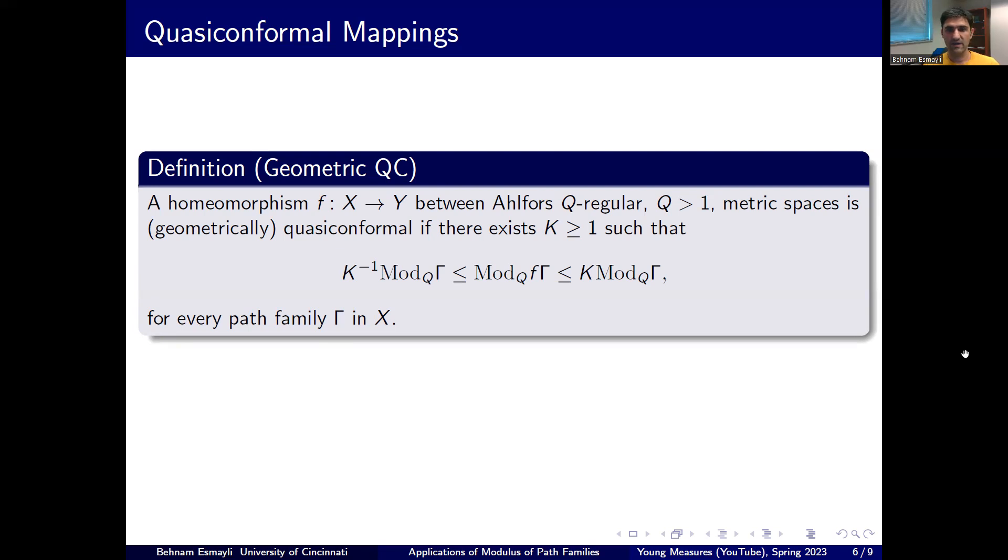So we can define these in more generality. One natural context, which doesn't allow very stupid examples, is when you have Ahlfors Q-regular spaces with Q strictly bigger than 1. And by Ahlfors Q-regularity means that the measure of the ball of radius r is comparable by a multiplicative constant to r to the power Q. And no matter where the center is, as long as the radius is less than diameter of the space.